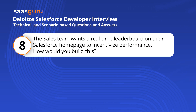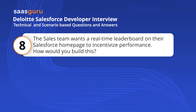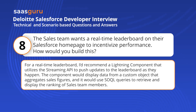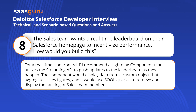The sales team wants a real-time leaderboard on their Salesforce homepage to incentivize performance. How would you build this? For a real-time leaderboard, I'd recommend a Lightning component that utilizes the Streaming API to push updates to the leaderboard as they happen. The component would display data from a custom object that aggregates sales figures and use SOQL queries to retrieve and display the ranking of sales team members.